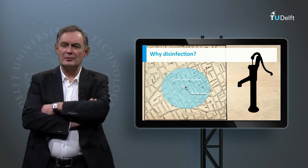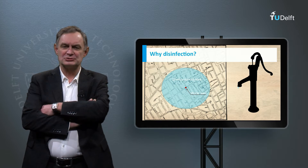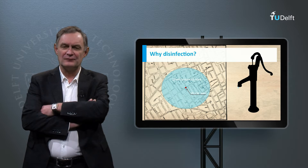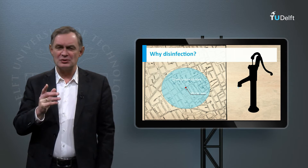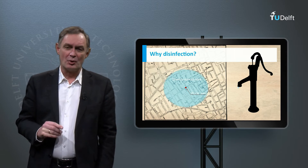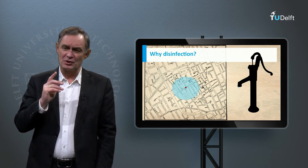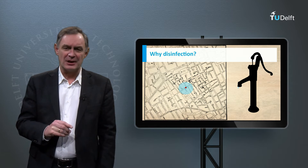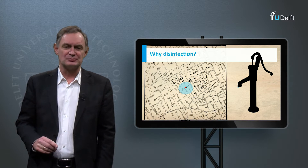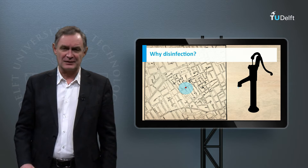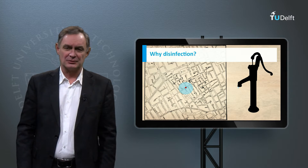Do you remember who John Snow was? Which discovery did he do in 1849? He was the first one reporting that the cholera epidemic was attributed to the consumption of non-disinfected well water.